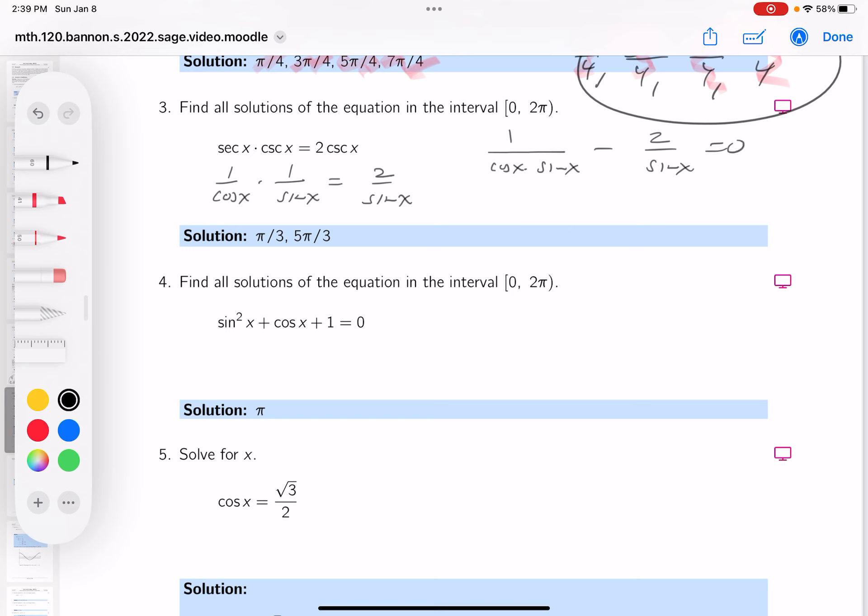Let's keep going. Common denominator, cosine x times sine x equals 0. And what do you get there? You get 1 minus 2 cosine of x.